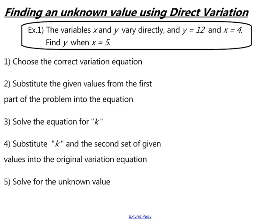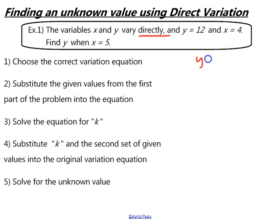When we're given a problem and we need to find an unknown value using direct variation, the problem might be given like this: the variables x and y vary directly, and y equals 12 when x equals 4. That tells you about the relationship between x and y. Then there's a second part: find y when x equals 5. So we choose the correct variation equation — since it said direct, we start with y equals kx. Then we substitute the given values: 12 equals k times 4.